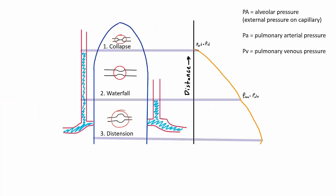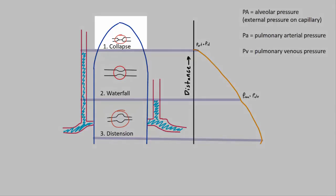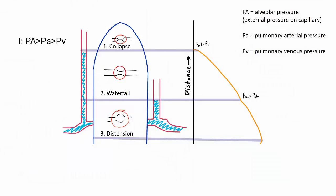Now we sum up all four concepts into understanding the zones of the lung. In zone one, the alveoli are naturally distended and exert pressure on blood vessels to the extent that the vessels are collapsed. In mathematical terms: alveolar pressure > pulmonary arterial pressure > pulmonary venous pressure. Note that pulmonary arterial pressure is always greater than pulmonary venous pressure.